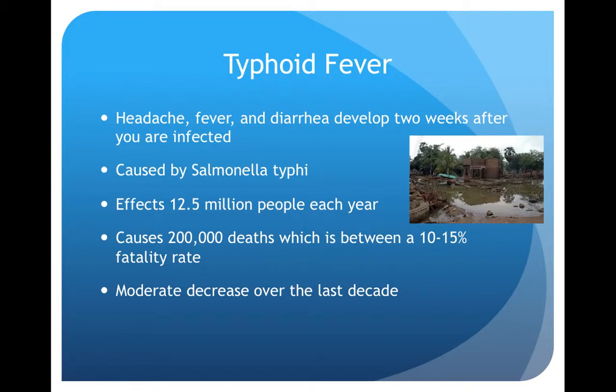Typhoid fever causes headache, fever, and diarrhea, all developing about two weeks after infection. It's caused by Salmonella typhi, which is the specific strain responsible for typhoid fever. 12.5 million people are affected by it each year, with 200,000 deaths, giving it roughly a 12–13% fatality rate. There has been a moderate decrease over the last decade, which is a good sign.